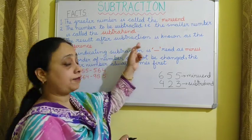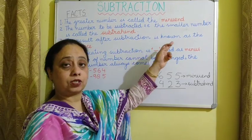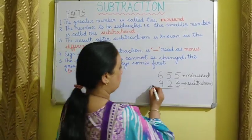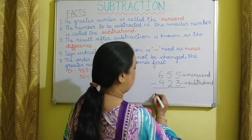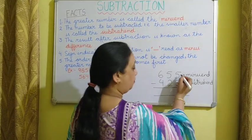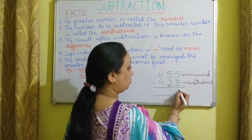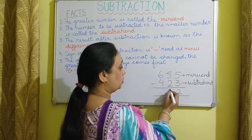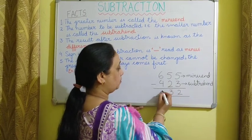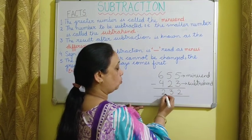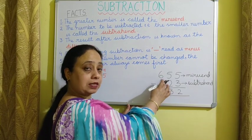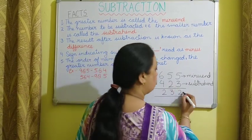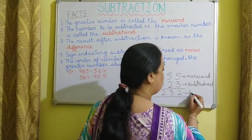The result after subtraction is known as the difference. When we subtract: 5 minus 3 is 2, 5 minus 2 is 3, 6 minus 4 is 2. This result, or the answer of subtraction, is known as the difference.